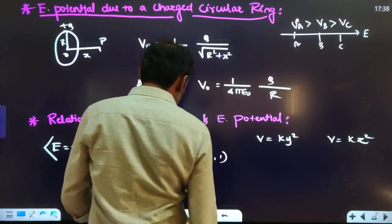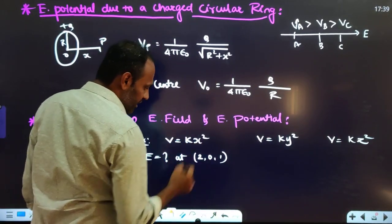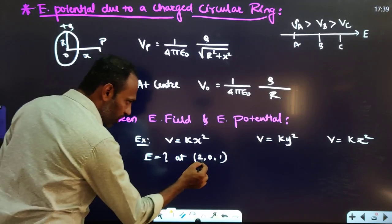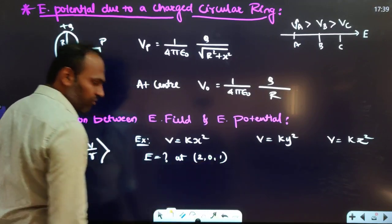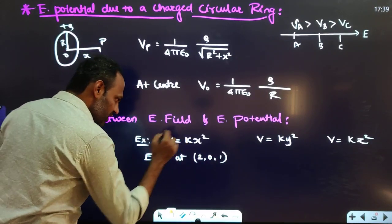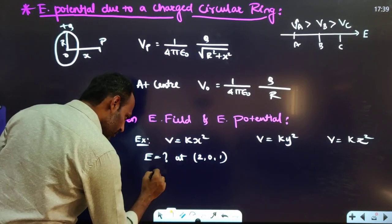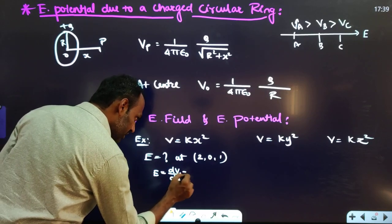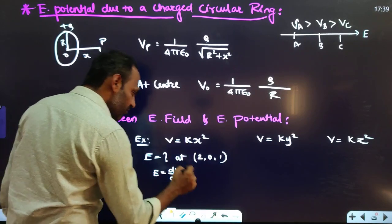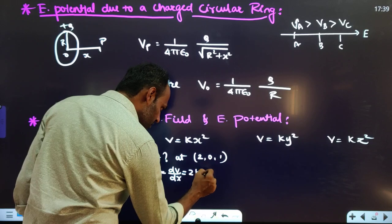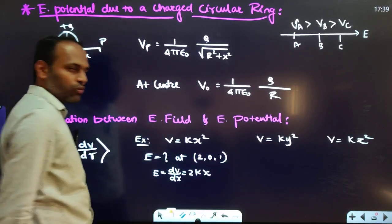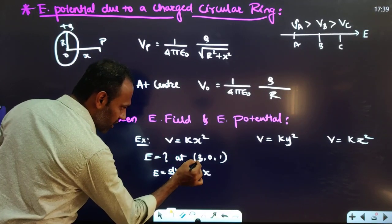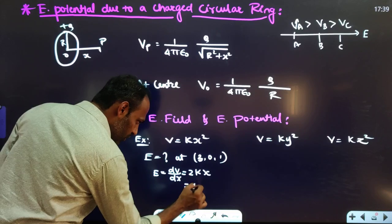For example, if the potential is given as V = kx², and you are asked to find the electric field at point (2, 0, 1), differentiate V with respect to x: dV/dx = 2kx. Substituting x = 2, the x-component of electric field = 4k.